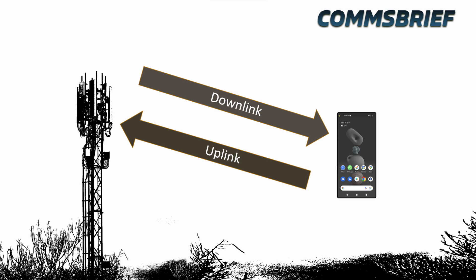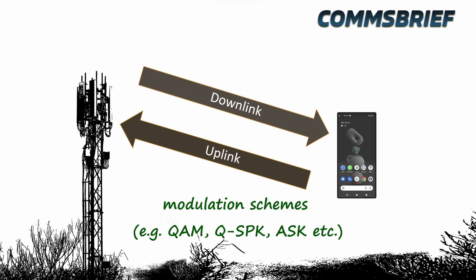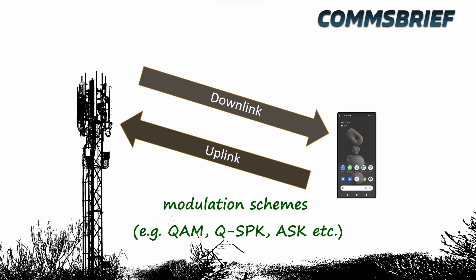This is where the radio access techniques come in — like multiple access, for example FDMA and TDMA, and associated modulation schemes, for example QAM and QPSK. These techniques determine whether the network is digital or analog. Let me show you how.